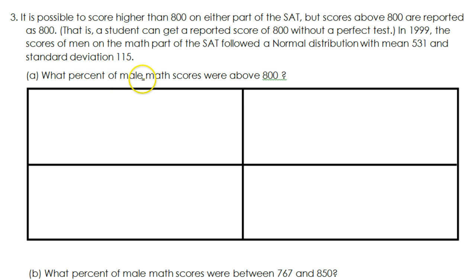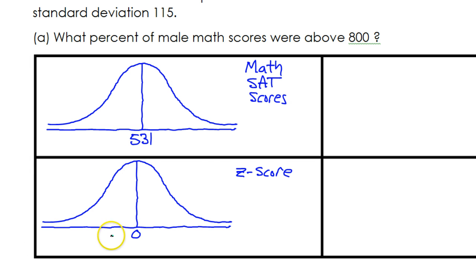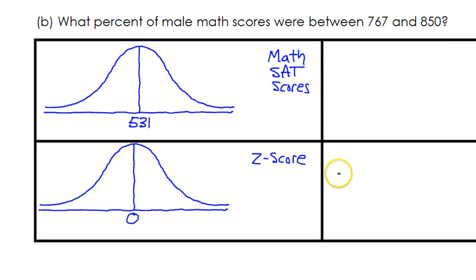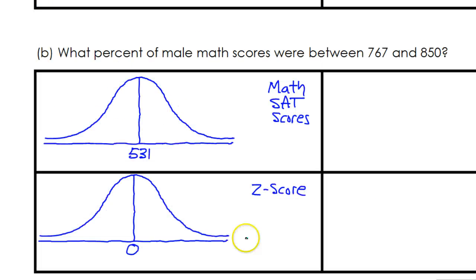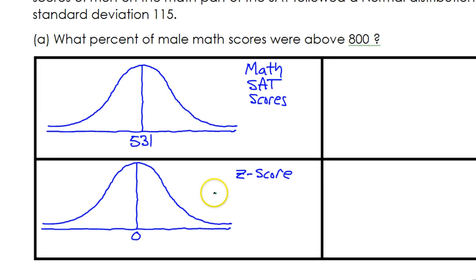What percent of male math scores were above 800? First thing you want to do is get your pictures ready and don't forget your labels. Up here we will do the math SAT scores and down here we will graph the z-score. I have included the mean in each case, 531 and 0. I see that it is going to be the same thing over and over again, so I went ahead and did that for all of the boxes.